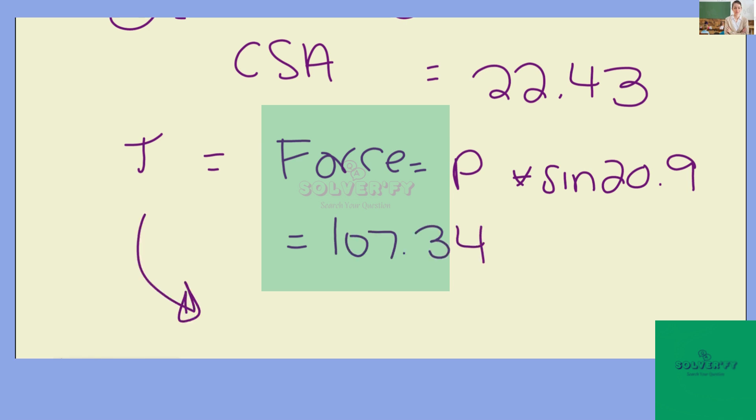Now we can calculate our shear stress by dividing our force along the weld by our cross-sectional area. So we take 107.34 divided by 13,376.2 to get 8.03.